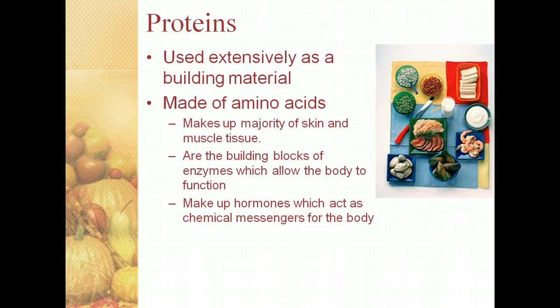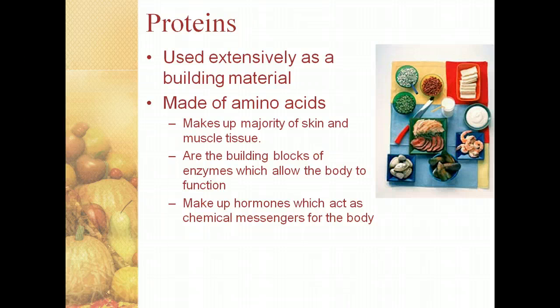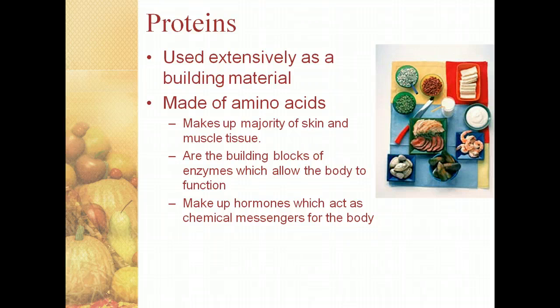The next nutrient we are going to talk about is proteins. Proteins are used extensively as a building material and are made up of amino acids. Proteins make up the majority of your skin and muscle tissue, are the building blocks of enzymes, and make up certain hormones that act as chemical messengers throughout the body.